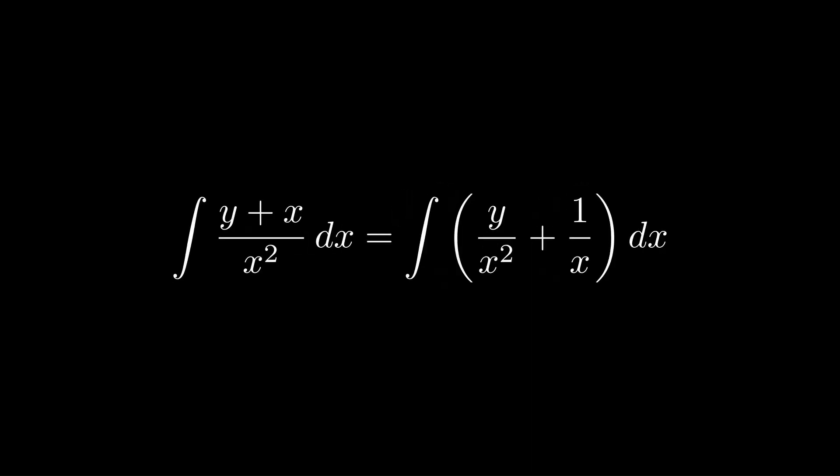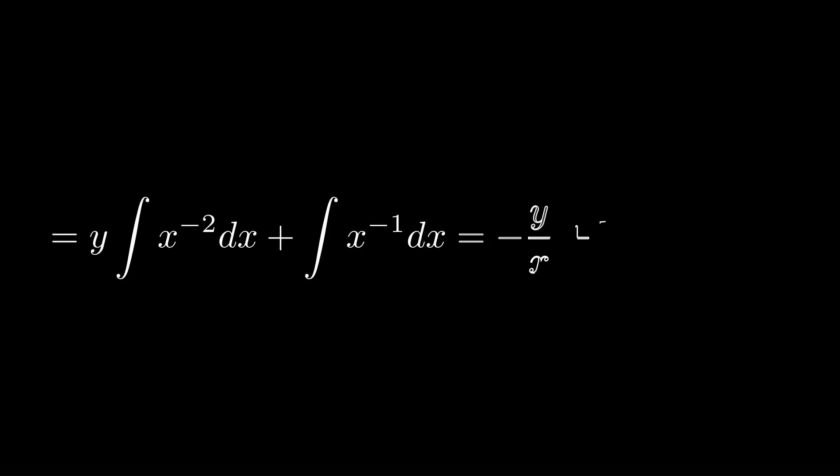We integrate M̃ with respect to x by splitting the fraction. Since y is constant with respect to x, it moves outside the integral. The integral of x^(−2) is −1/x, and the integral of x^(−1) is ln|x|, giving us −y/x + ln|x| + h(y).